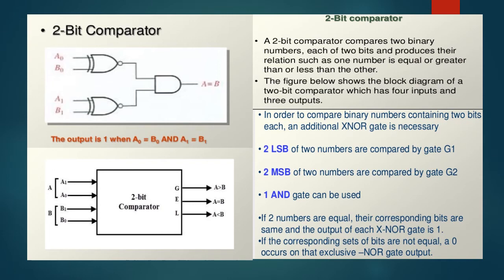A 2-bit comparator comprises two binary numbers. Each of two bits produces their relation such as one number is equal or greater than or less than the other. The figure below shows the block diagram as well as the logical circuit of a 2-bit comparator which has four inputs and three outputs. In order to compare binary numbers containing two bits each, an additional XNOR gate is necessary. Two LSB of two numbers are compared by gate G1. Two MSB of two numbers is compared with gate G2.